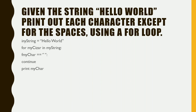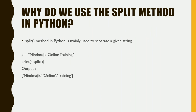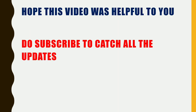Here are some basic coding questions. First: given the string 'Hello World', print out each character except for spaces using a for loop — a sample code is provided on the slide. Second: how to remove values from a Python array — a sample code is provided. Third: why do we use the split method in Python? The split method is mainly used to separate a given string. Fourth: write Python code to sort a numerical dataset — the code sorting the dataset is shown on the slide.